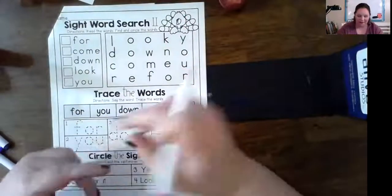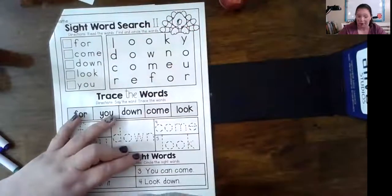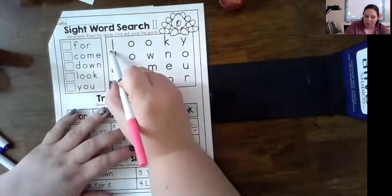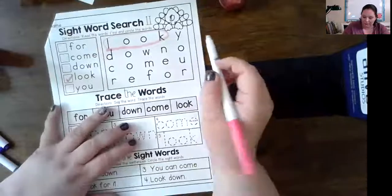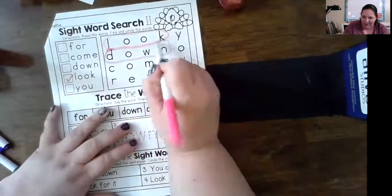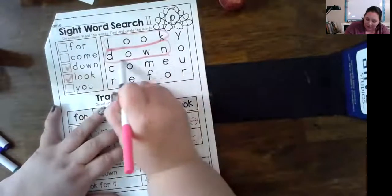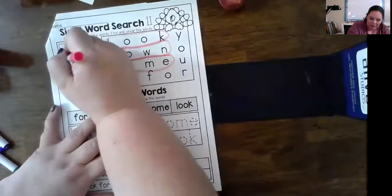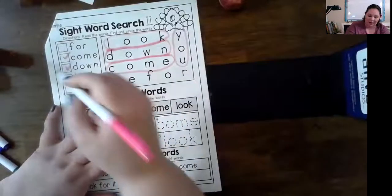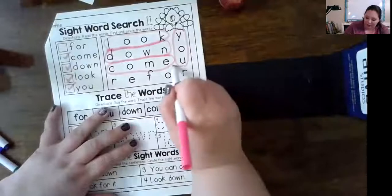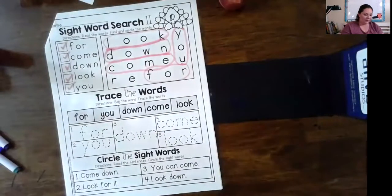We did this similar yesterday with some other sight words. We have the sight words for, come, down, look, you. Let's see, do I see one right here? There's look. Oh there's down. Boy they made this one really easy didn't they? Oh there's come. There's you, Y-O-U. And four, F-O-R. Wow, that was pretty easy.